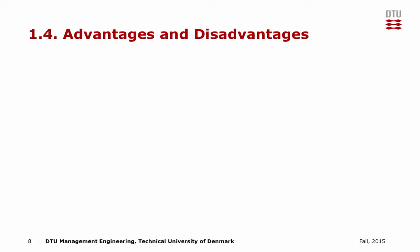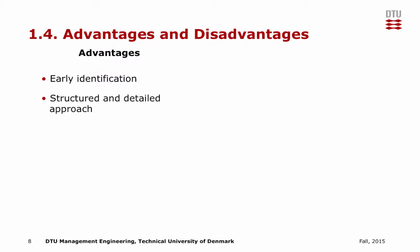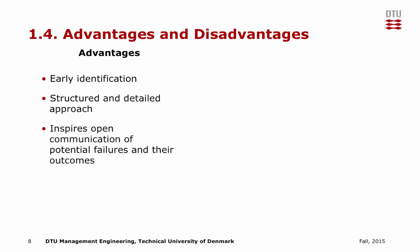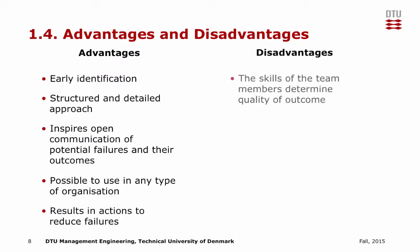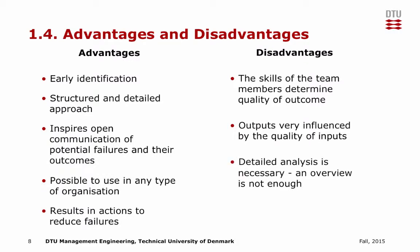The advantages and disadvantages of using FMEA. Advantages: early identification — it can identify and address safety issues before a failure occurs; it is a structured and detailed approach; it inspires open communication of potential failures and their outcomes; it is possible to use in any type of organization; and it results in actions to reduce failures. Disadvantages: the skills of the team members determine the quality of the outcome; the outputs are heavily influenced by the quality of inputs; a detailed analysis is necessary — an overview is not enough; and it can be time-consuming and repetitive if the process is complex.